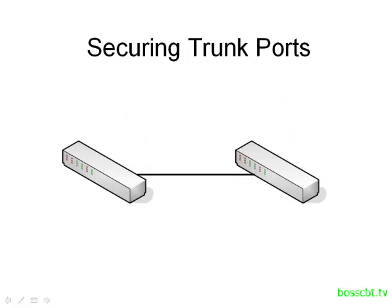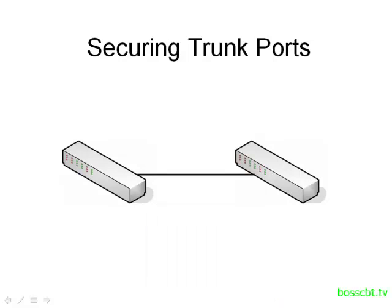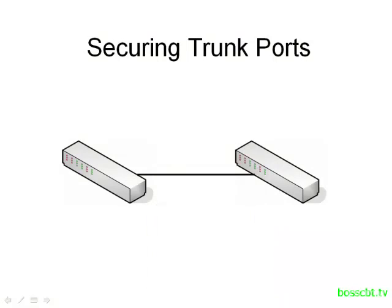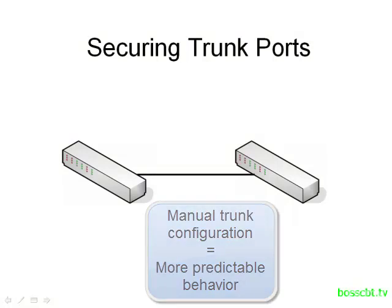Here we have two switches and there's a trunk between them. The best practice in the industry states to disable negotiation between switches that are going to trunk and to manually configure your trunk ports. This is a recommendation targeted towards a predictable, more stable network. If you manually configure these ports to trunk and to only trunk, and they will not negotiate, then you know how they're going to behave every single time.